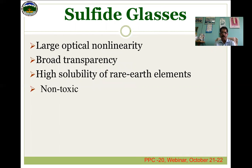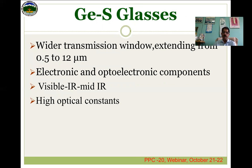Why sulfide glasses? Because they have large optical nonlinearity, a broad transparency in the IR and visible region, high solubility of rare earth elements, and they are non-toxic — which is very important if you want to use these materials for health purposes, daily life sensors, and biosensors. Among sulfide glasses, we are considering germanium sulfide glasses because they have a wider transmission window extending from 0.5 micrometers to 12 micrometers, they are used in electronic and optical components in the visible, IR, and mid-IR, and they have high optical constants.